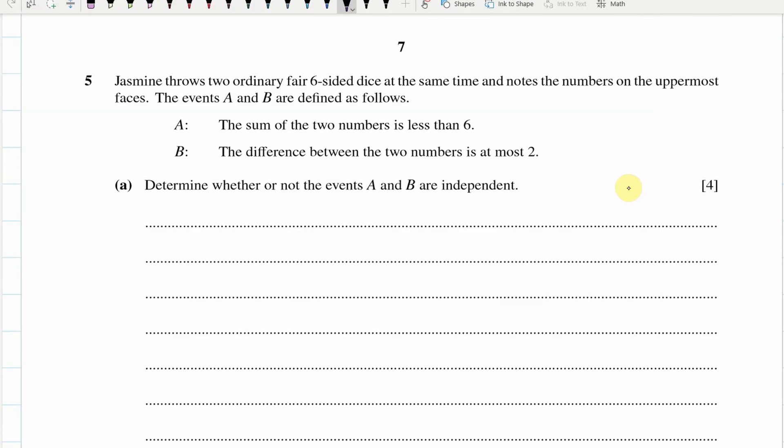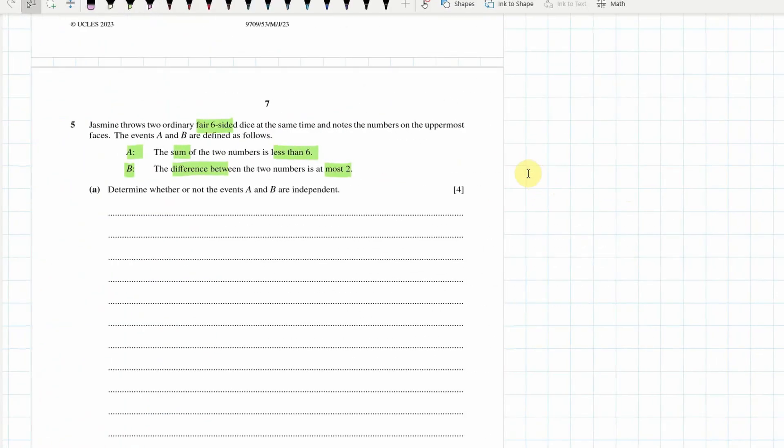So, next one, Jasmine, good old Jasmine. Two six-sided dice, and we've got events A and B. Yes, A, sum less than six. And B, difference at most two. And we've got to decide whether or not they're independent.